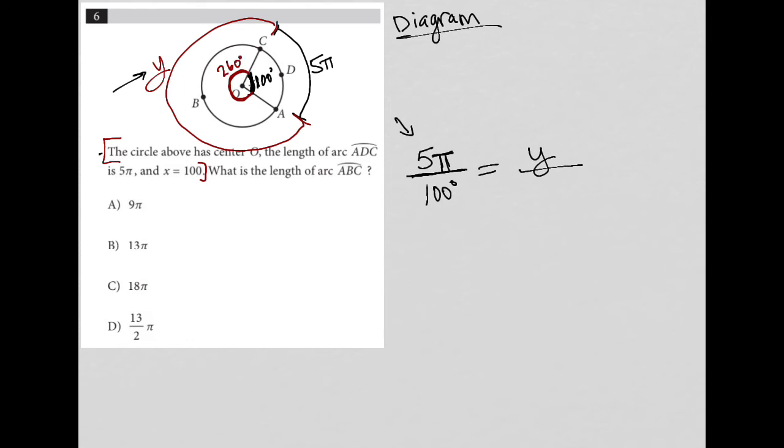Why? Because 260 plus 100 is 360. As you can see, my red angle and my black angle here add up to a full circle. That must be 360 degrees altogether, leaving me with 260 degrees for the central angle that corresponds to the y arc. So here's my relationship.